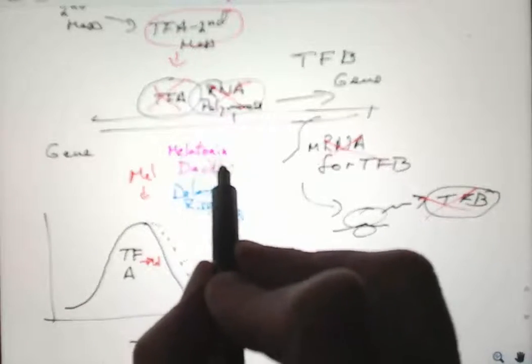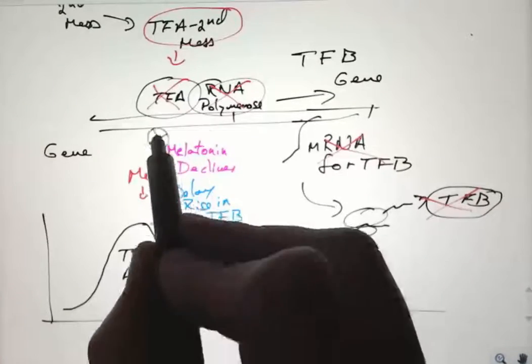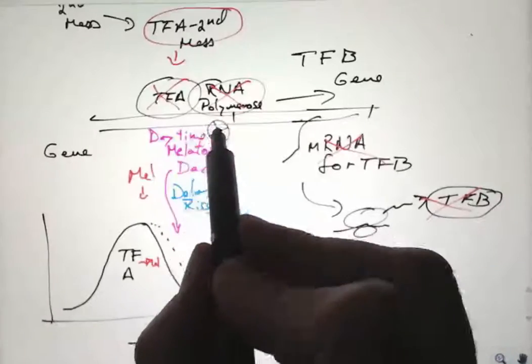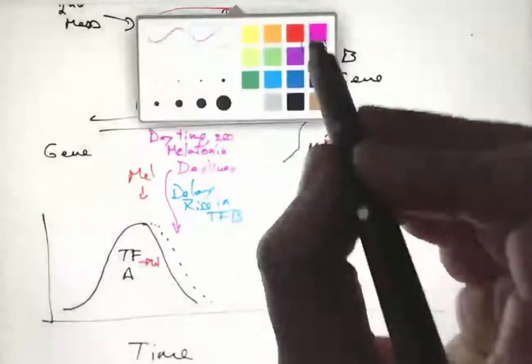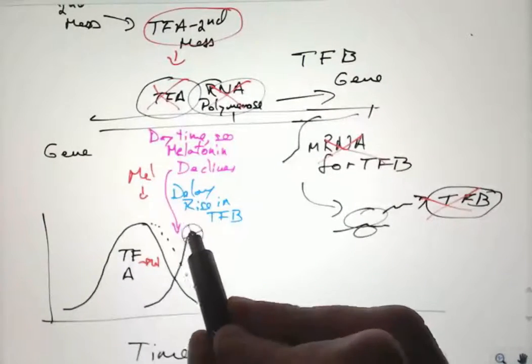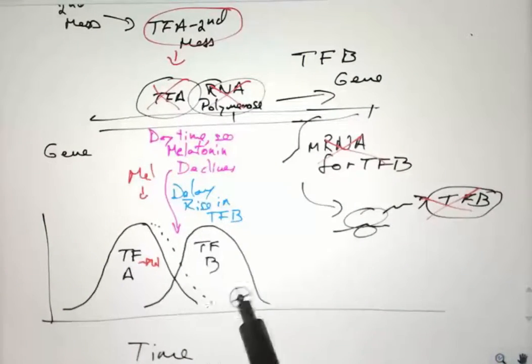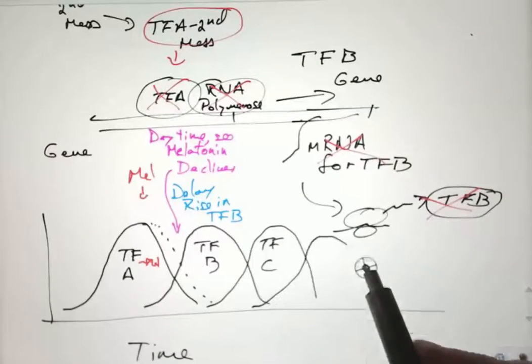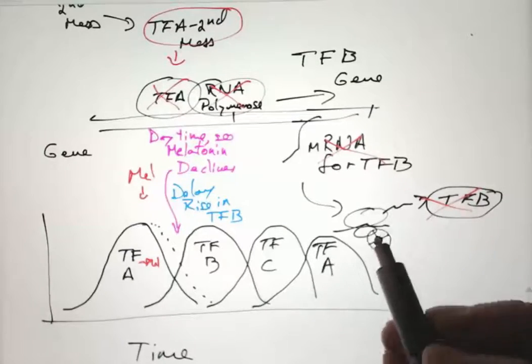Transcription factor A sticks around longer because it's not inhibited, and melatonin then declines. As melatonin declines during the daytime, finally, at the end of this delay, transcription factor B can rise and the whole cycle can keep going.